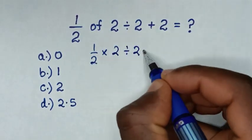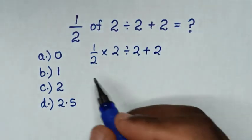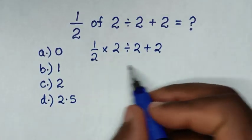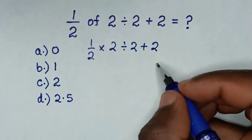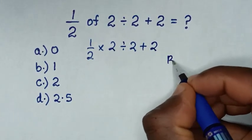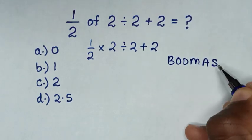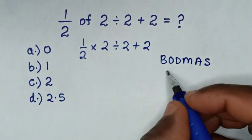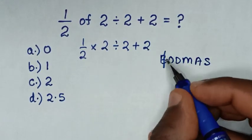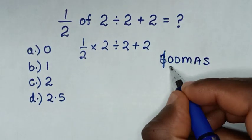Now let's solve it by using BODMAS rule. So let's write the rule which is BODMAS, where B is bracket. In this problem we don't have bracket. O is order. In this problem we don't have order or exponents.